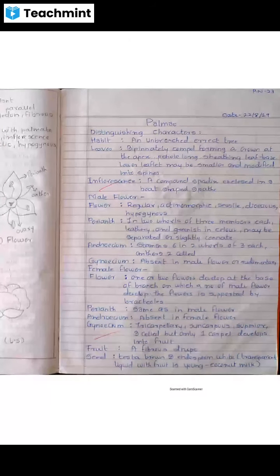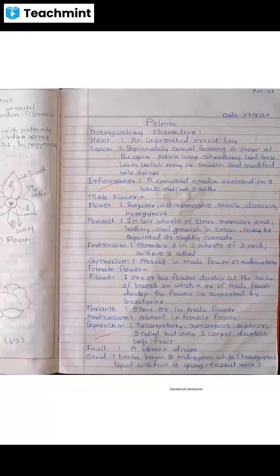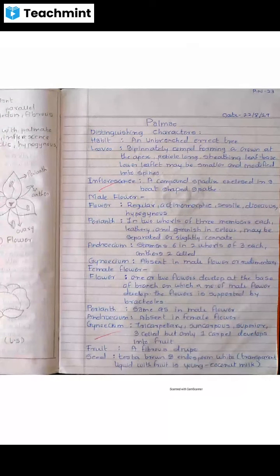Inflorescence: compound spadix enclosed in a boat-shaped spathe. Male flower: actinomorphic — radial symmetry — sessile (directly attached to the stock without stalk). Dioecious — male and female reproductive organs are in separate individuals. Hypogynous flower. Perianth in two whorls of three members each, leathery and greenish in color.